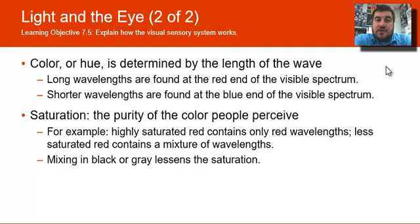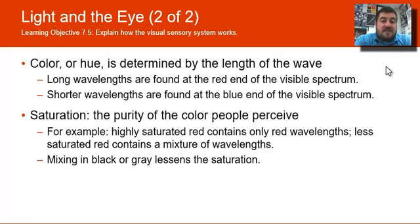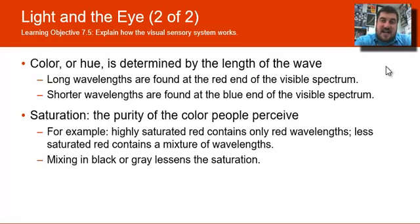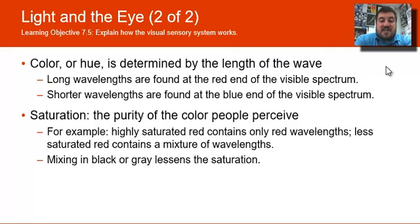That is why the sky is blue — shorter wavelengths penetrate the ozone layer. Saturation is the purity of color perceived. The less saturated a color is, the more it contains a mixture of wavelengths. A highly saturated red would contain only red wavelengths. If you mix in black or gray, it lessens the saturation.